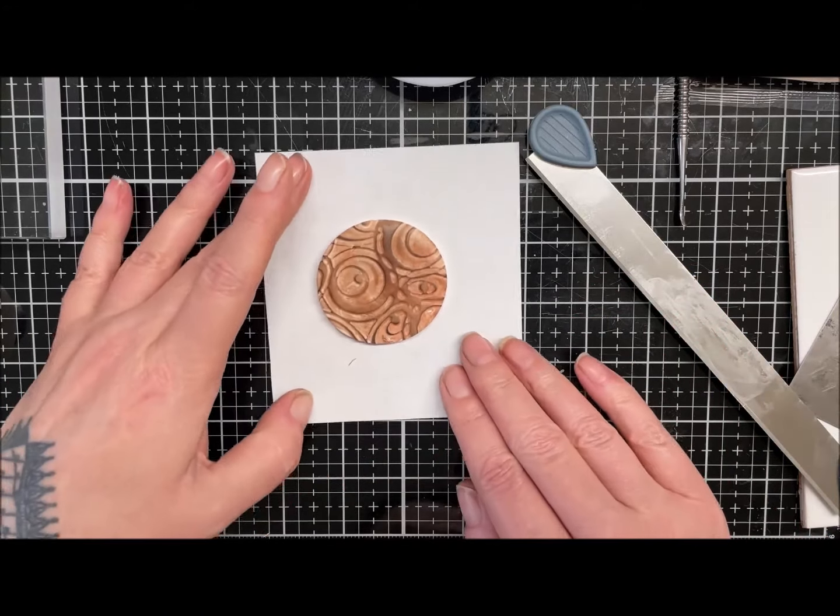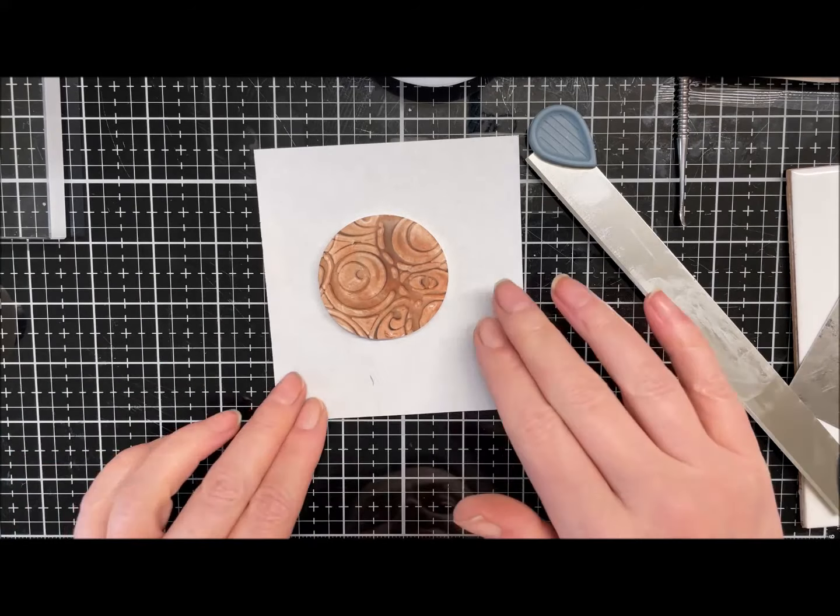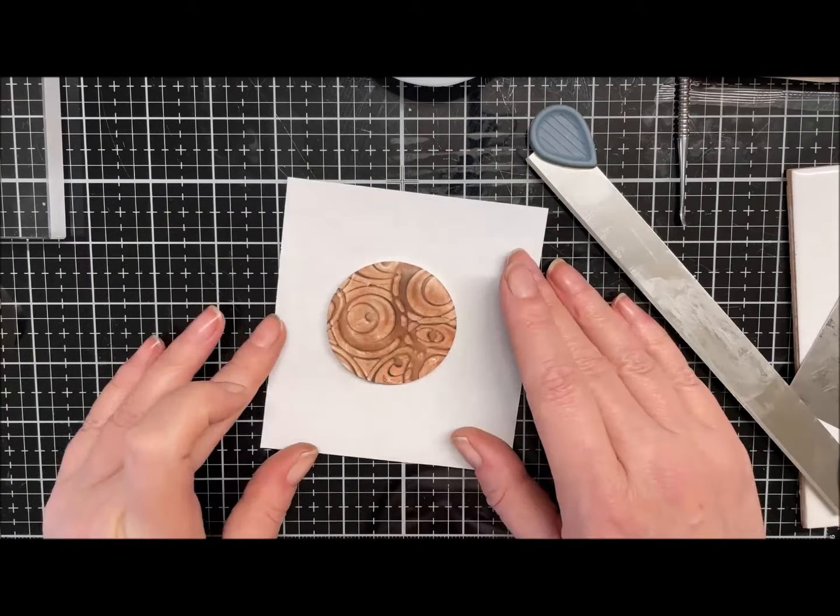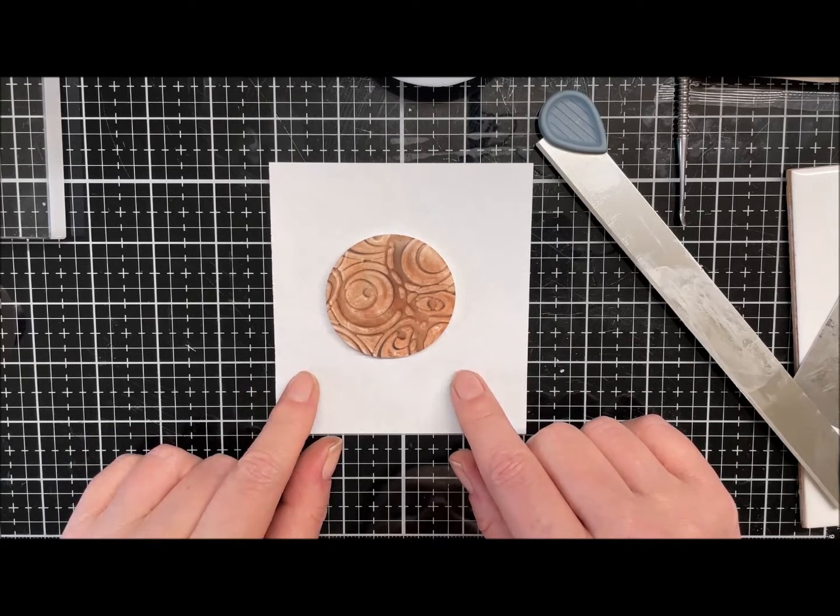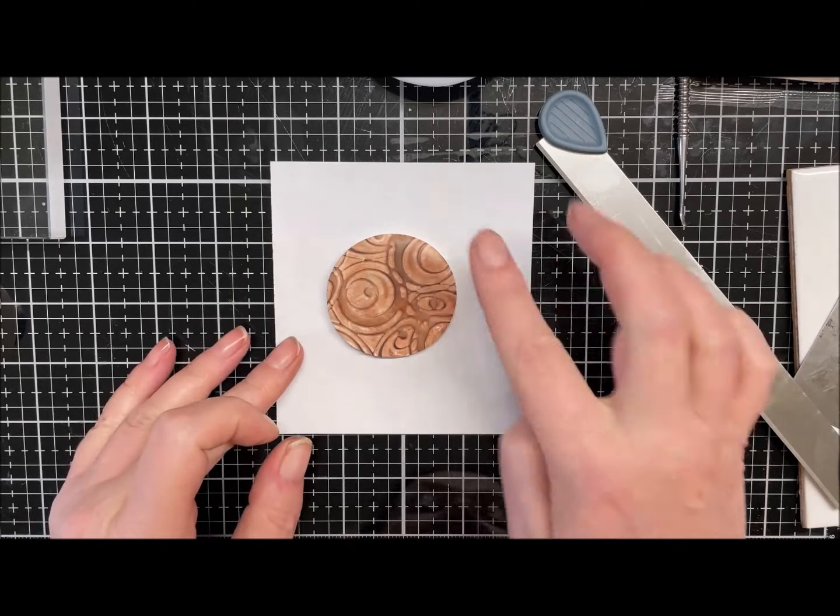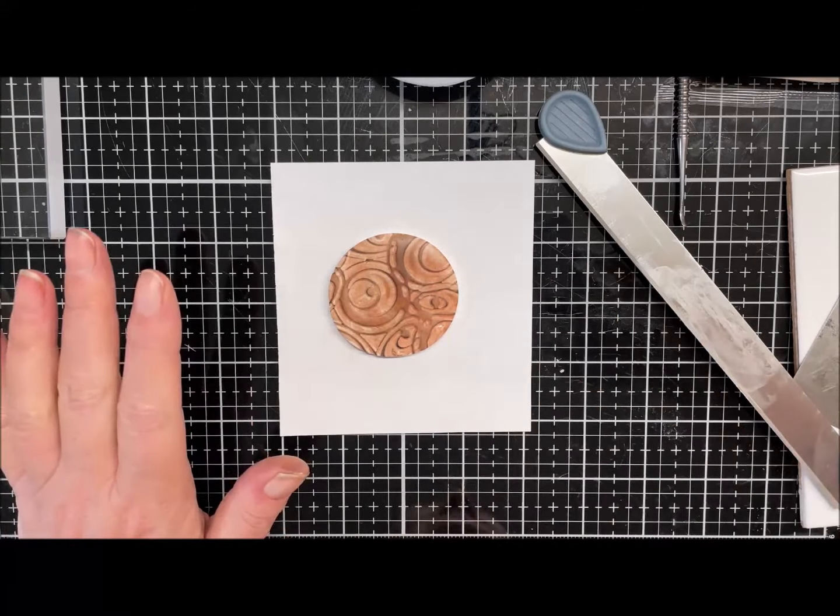I shall pop this in the oven to part bake. I could make a donut, couldn't I? No, I'll leave it as a disc, I don't want any flooding. I'll pop this in the oven, part bake it for 15 to 20 minutes, and we'll come back and put our glaze on when I'm done. See you in a minute.